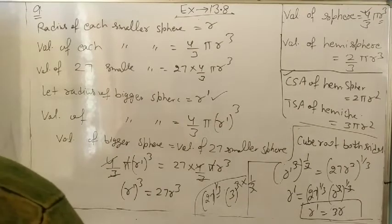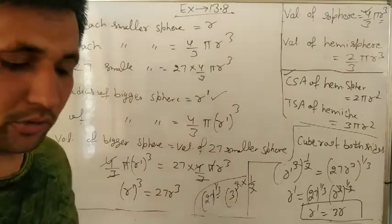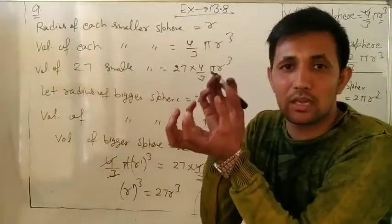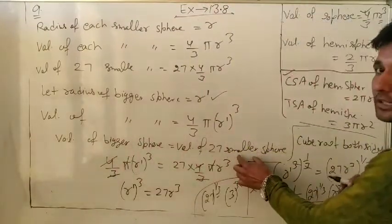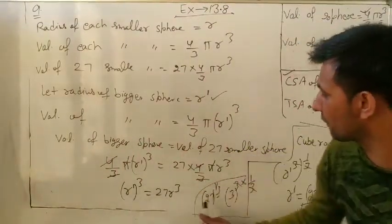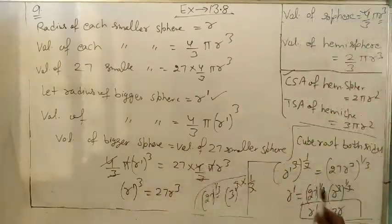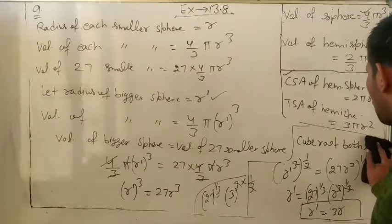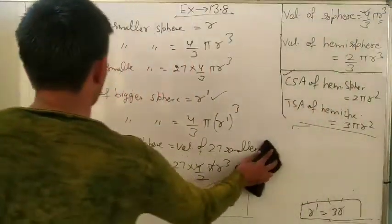So r' = 3r — the radius of the bigger sphere is 3 times the radius of the smaller sphere. This makes sense because we melted all 27 smaller spheres to make one bigger sphere, so volume of all smaller equals volume of bigger.